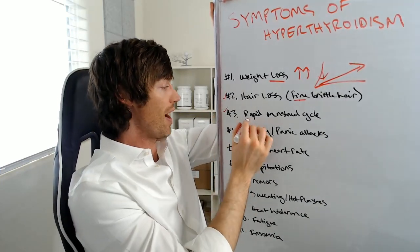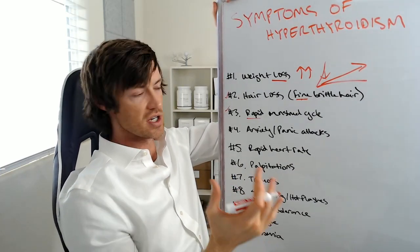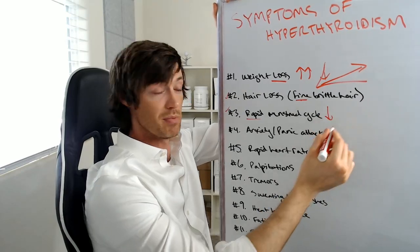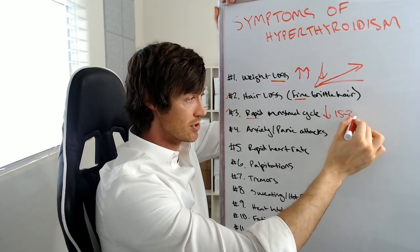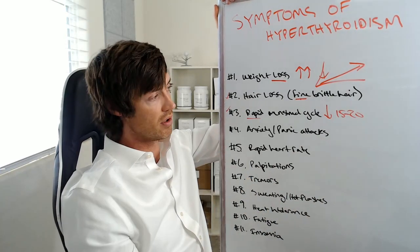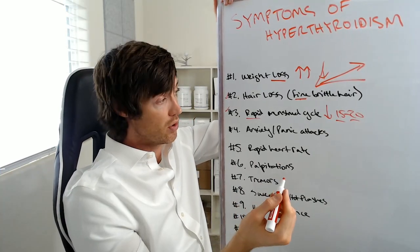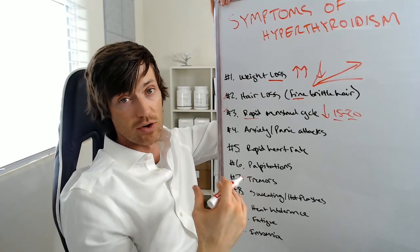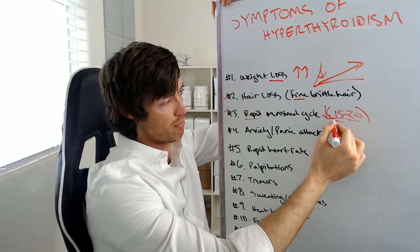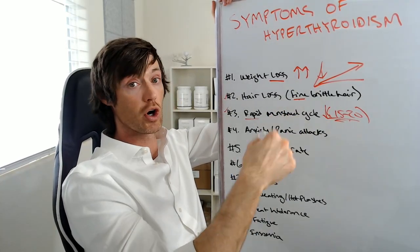That leads us to number three: rapid menstrual cycling. The prototypical cycle is about 28 days. As you become hyperthyroid, that cycle time will reduce — your cycle could be every 15 to 20 days. The more thyroid hormone you have, the more rapidly you cycle. The higher your thyroid goes, the more rapid that becomes — it could go all the way down to 8 or 9 days; I've seen it in the 12 to 13 day range. If you're hypothyroid, it can occur every 35 to 40 days or even longer. So the menstrual cycle is still occurring, but it's occurring more rapidly.